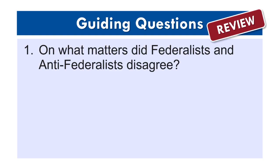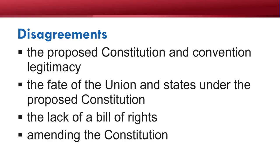Two states were key in the battle between the Federalists and the Anti-Federalists. It was vital for the success of the new government that Virginia and New York ratify the Constitution. There were four main differences between the Anti-Federalists and the Federalists: the proposed Constitution and Convention legitimacy, the fate of the Union and the states under the proposed Constitution, the lack of a Bill of Rights, and amending the Constitution.